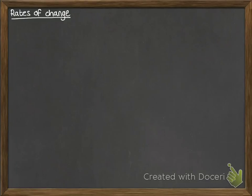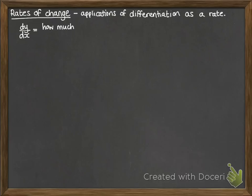Right, rates of change. This is a practical application of the chain rule. With our differentiation, you must remember that we're always talking about a rate when we're talking about differentiation. So dy by dx literally means how much y changes as x changes. So it's a rate of how y is changing with regard to how x is changing.